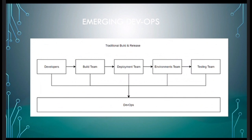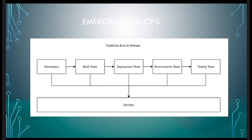This is how the traditional build-and-release model compares to a DevOps model. Developers write code, and build, deployment, testing, and environment teams all come under DevOps. The testing team still exists — they write testing scripts — but we integrate those scripts into our automation.